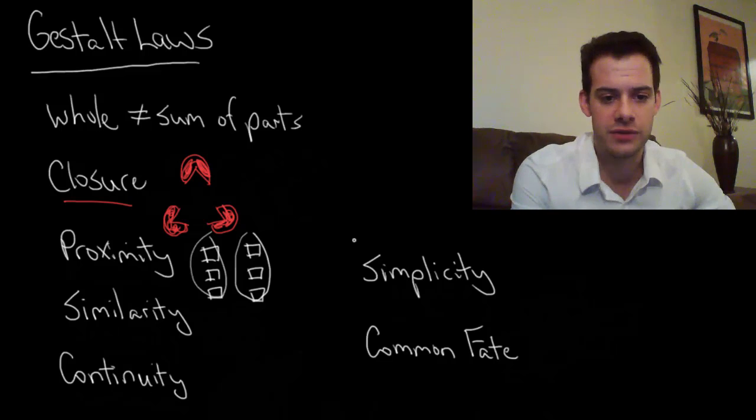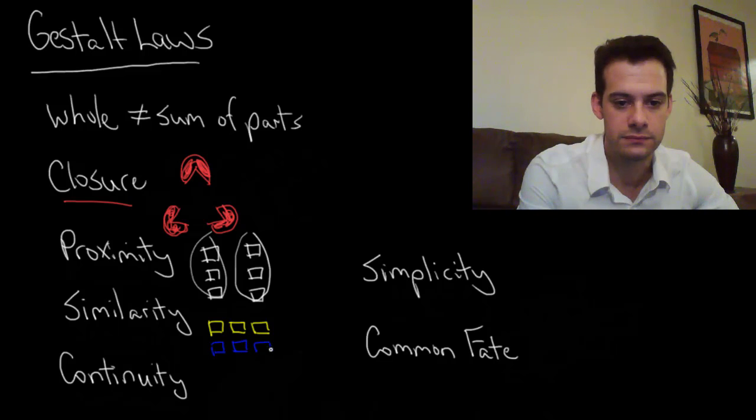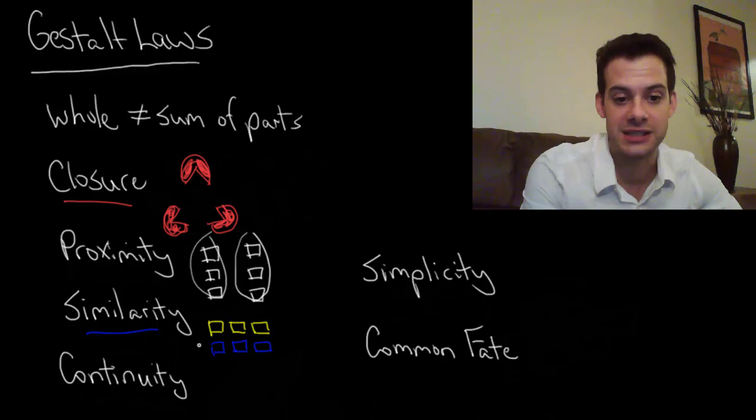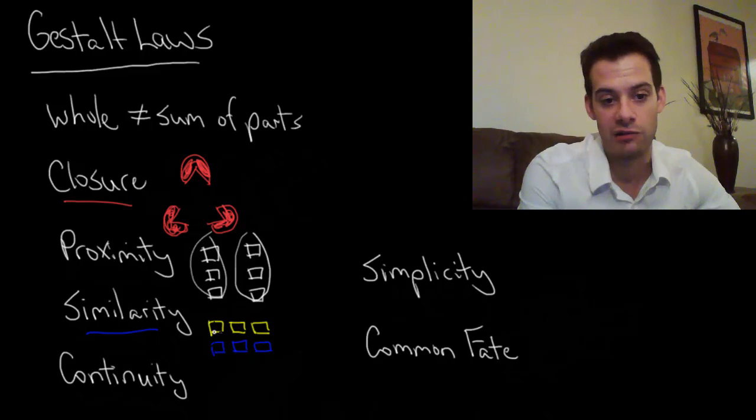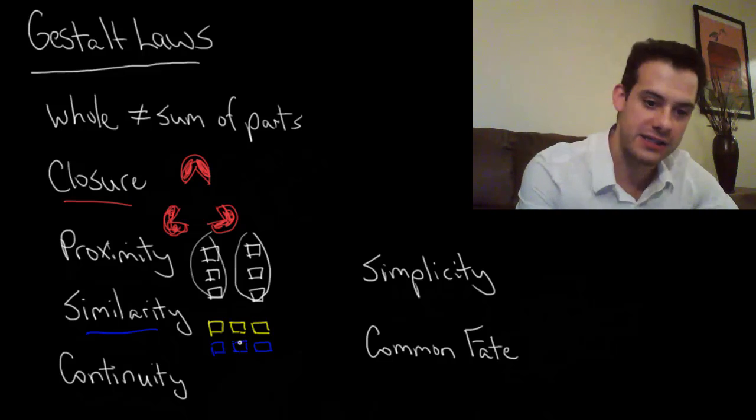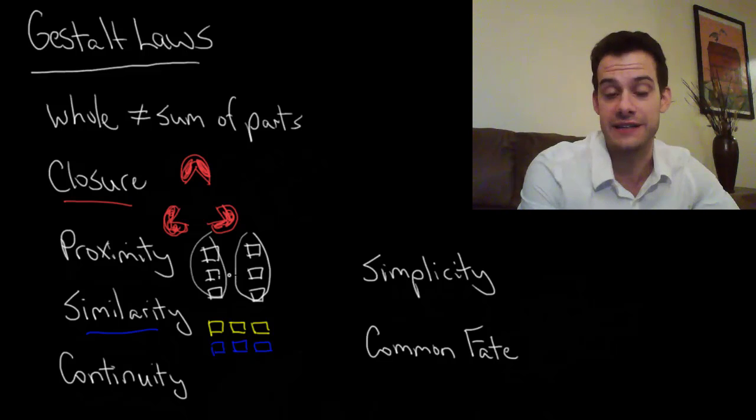Alright next we have the idea of similarity. So let's use some more boxes. And this time I'm going to try to draw them fairly equally spaced so we can't use proximity anymore. Okay so how would you group these objects? Well it's kind of obvious right? You'd group them based on how similar they are to one another. You'd probably see this as a group of yellow boxes and a group of blue boxes, rather than a group of one yellow box and one blue box. That's not how you would probably choose to perceive this.